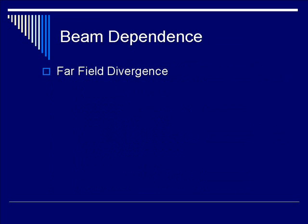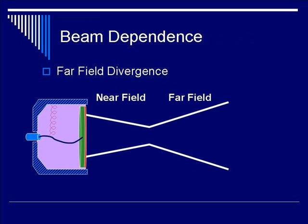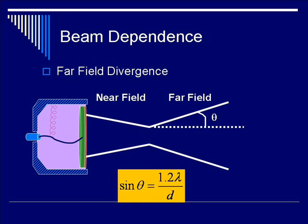Let's talk about far field divergence. This is the angle between the boundary of the ultrasound beam relative to the horizontal line, as defined in the diagram. Theta is the angle of spread of the ultrasound beam beyond the minimum beam width. Sine theta, by this definition, equals 1.2 lambda divided by D. Note the equation applies to an unfocused single transducer element.